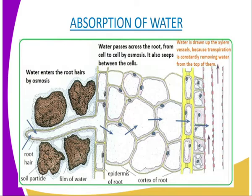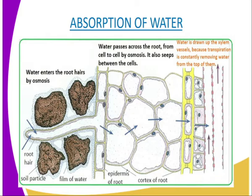Due to the presence of dissolved substances in the cell sap of the root hair, the concentration of the cell sap is greater than that of the surrounding solution in the soil. A concentration gradient therefore exists between the sap in the vacuole of the root hair cell and the soil water. This exerts a high osmotic pressure, thus drawing the water molecules across the cell membrane into the root hair cells. The osmotic pressure exerted by the root hair cells overcomes the water-retaining powers of the soil, thereby enabling water in the soil to enter the root.